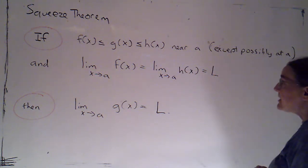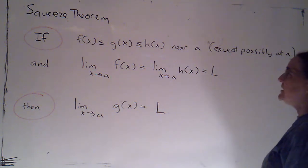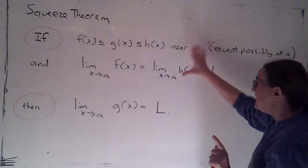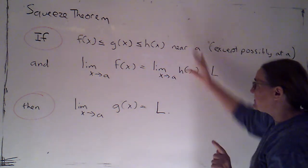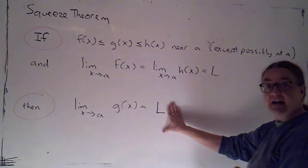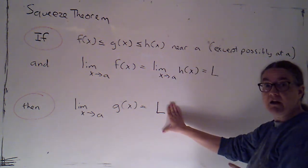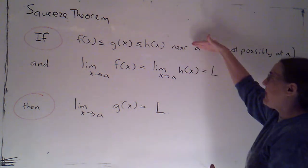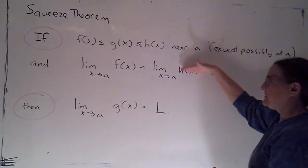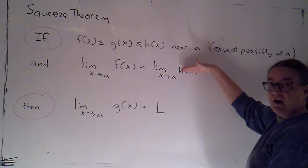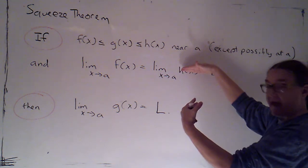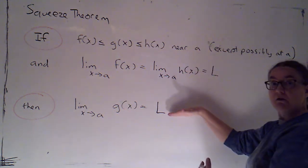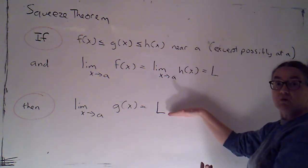To use a theorem, what you need to do is say: the mathematicians have told me, if these conditions are satisfied, I get this result. So you would simply show that the conditions are satisfied — you would demonstrate that — and then you get to conclude your result.